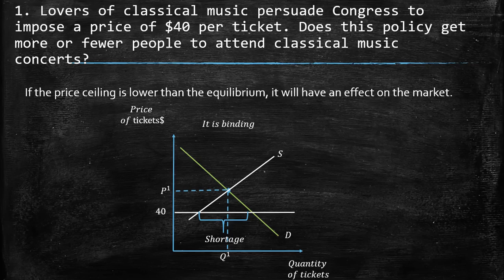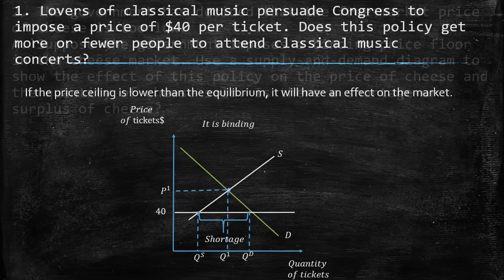At the same time, the demand is going to be higher — there is more willingness from people to demand more. So in this case, there is going to be an imbalance between demand and supply. The demand is higher than supply because of the lower price. It is going to be a shortage. This is the quantity offered and this is the quantity demanded.